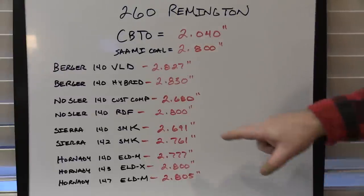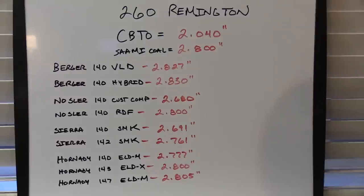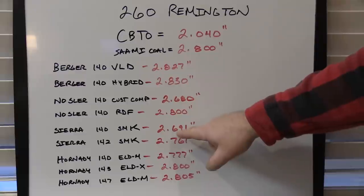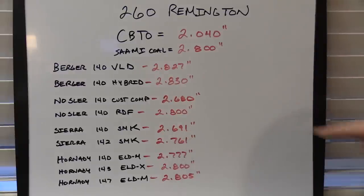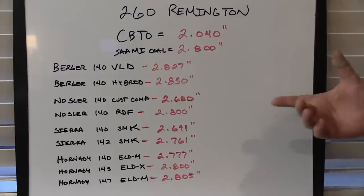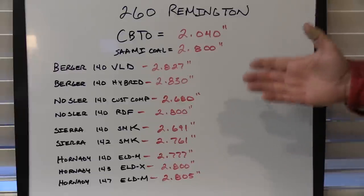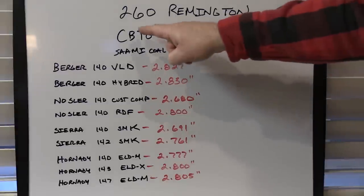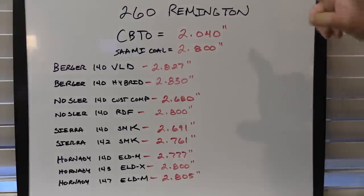Good luck trying to match any of those up. In fact, if you went with the SAAMI cartridge overall length for the 140 grain SMK and seated at 2.800, you're going to be a little over a hundred thousandths deeper into the lands - jamming it almost a hundred thousandths into the lands. You can see why that's not only bad for accuracy or ES, but it could also be dangerous. It's important to understand the difference between cartridge base to ogive and COAL.